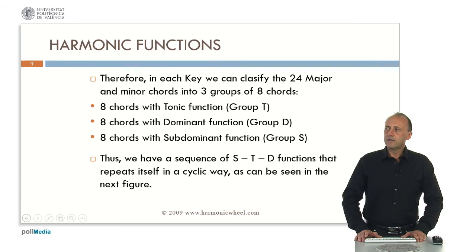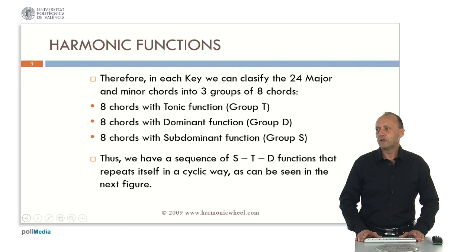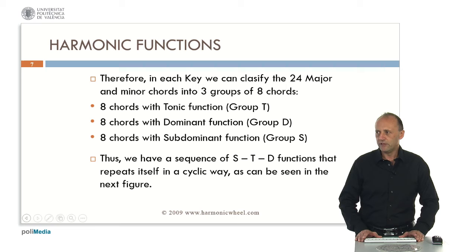Therefore, in each key — we started with C major key, but we can start with any other key — we can classify the 24 major and minor chords into three groups of eight chords each. A group with eight chords having a tonic function, which will be called group T. Another group with eight chords having a dominant harmonic function, which will be called group D. And eight chords with subdominant harmonic function, which will be called group S.